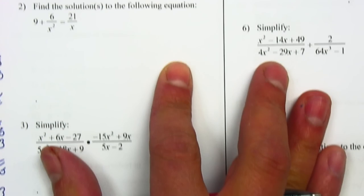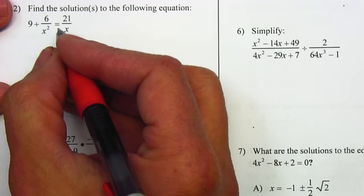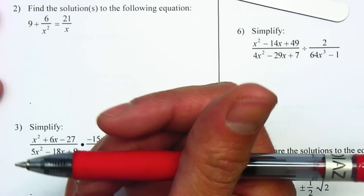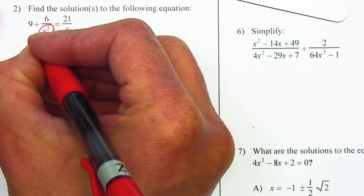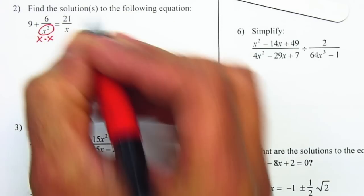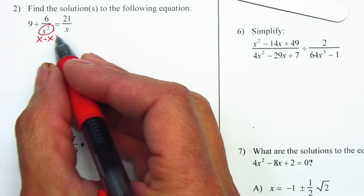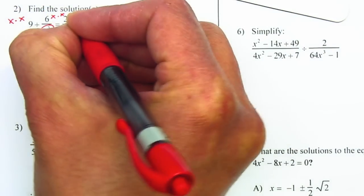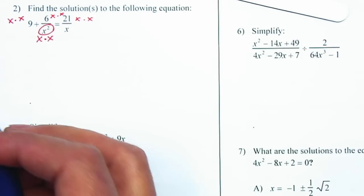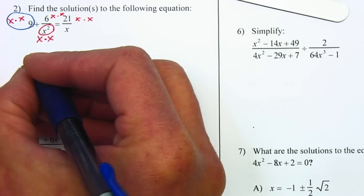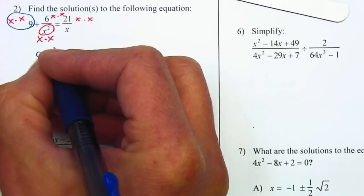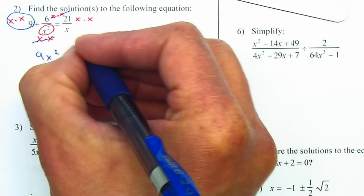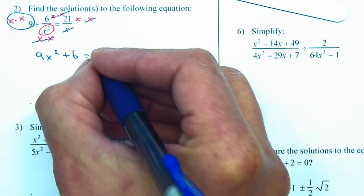Let's continue with problem number 2. We still have an equation. I want to factor the denominator — same thing as number 1. I factor x² as x × x. Remember, whenever you have an equation your whole purpose is to cancel the denominator, so I multiply each term by x². On the first term, nothing cancels: x × x × 9 gives 9x². On the next term, both x's cancel, leaving +6. On the last term, one x cancels, leaving 21x.